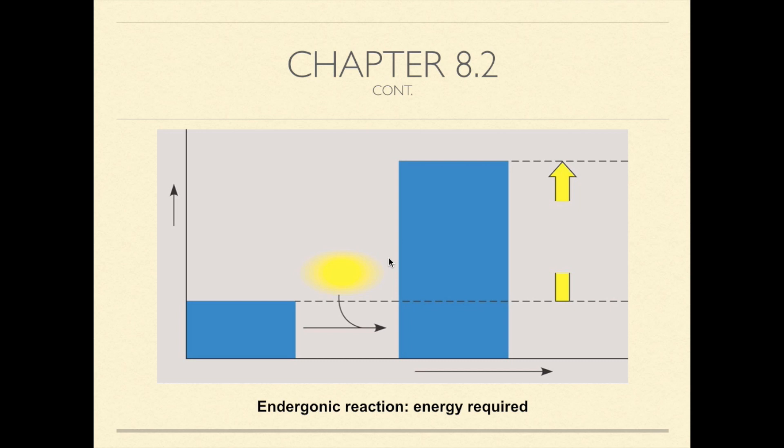If a chemical process is exergonic or downhill in one direction, then the reverse process must be endergonic or uphill. For example, if cellular respiration releases 686 kcal, then photosynthesis, the reverse action, must require an equivalent investment of energy.